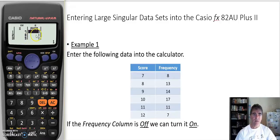But for a large data set, let's go and put - we've got 8, 13, 14, 9, 17, 10, 11, 11, and we've got 7, 12. Okay, so that's how we enter our data. We've got our frequency column on.